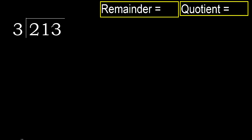213 divided by 3. 2 is less than 3, therefore move to next. 21 is not less, therefore work with 21. 3 multiplied by which number is nearest?